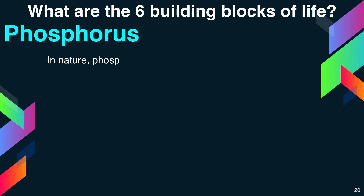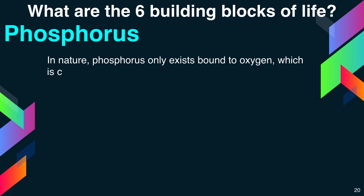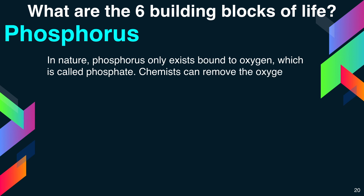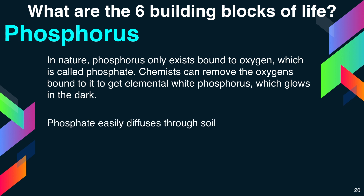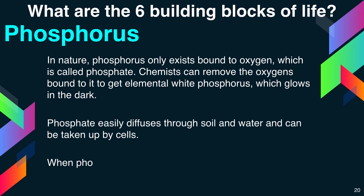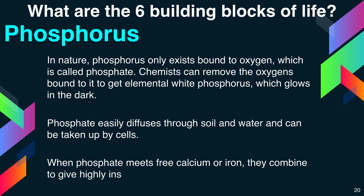In nature, phosphorus only exists bound to oxygen, which is called phosphate. Chemists can remove the oxygen bound to it to get elemental white phosphorus, which glows in the dark. Phosphate easily diffuses through soil and water and can be taken up by cells. When phosphate meets free calcium and iron, they combine to give highly insoluble solids.